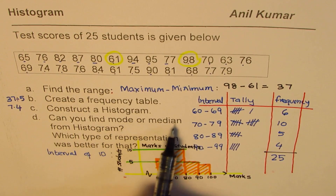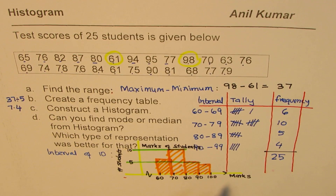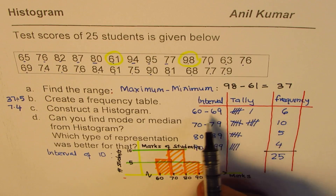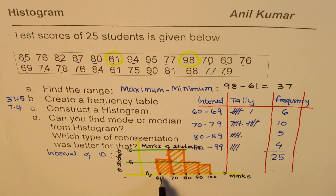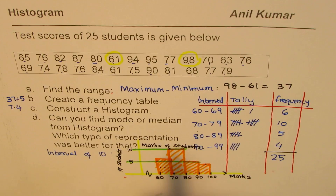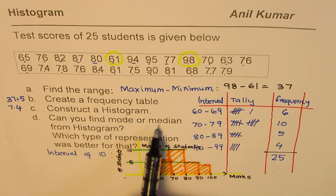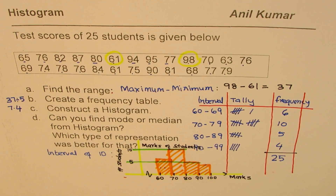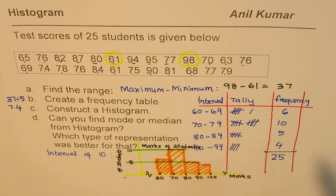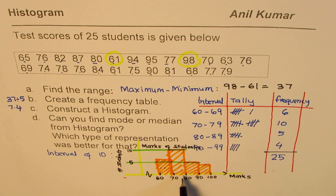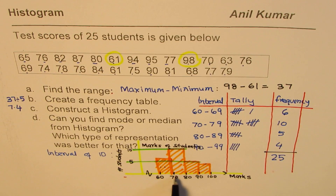Part D asks: can you find mode or median from the histogram? The answer is no. Since we merged all individual scores into intervals when making the tally and frequency table, we no longer know the exact marks — only that six students scored between 60 and 69, for example. From a histogram you cannot find mean, mode, or median. However, you can see that most students scored between 70 and 80.